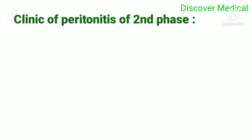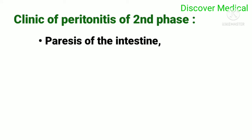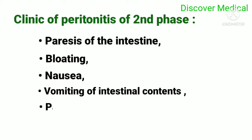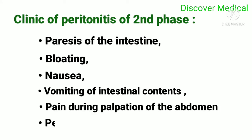Clinic of peritonitis of the second phase: crisis of the intestine, bloating, nausea, vomiting of intestinal contents, pain during palpation of the abdomen, and peritoneum irritation.